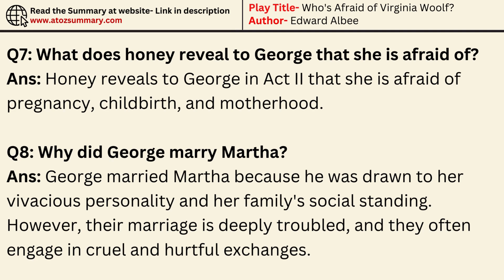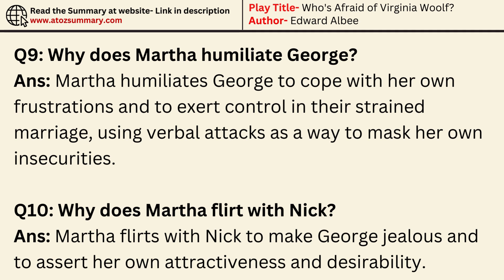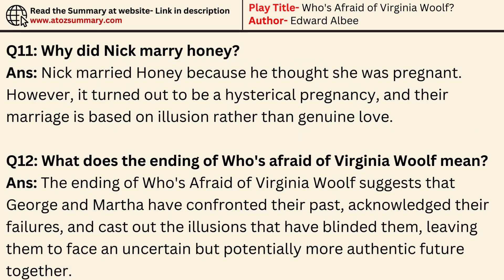What does George teach? George is an associate professor of history at the college where he and his wife Martha live. Why did George marry Martha? George married Martha because he was drawn to her vivacious personality and her family's social standing. However, their marriage is deeply troubled, and they often engage in cruel and hurtful exchanges. Why does Martha humiliate George? Martha humiliates George to cope with her own frustrations and to exert control in their strained marriage, using verbal attacks as a way to mask her own insecurities. Why does Martha flirt with Nick? Martha flirts with Nick to make George jealous and to assert her own attractiveness and desirability. Why did Nick marry Honey? Nick married Honey because he thought she was pregnant. However, it turned out to be a hysterical pregnancy, and their marriage is based on illusion rather than genuine love.